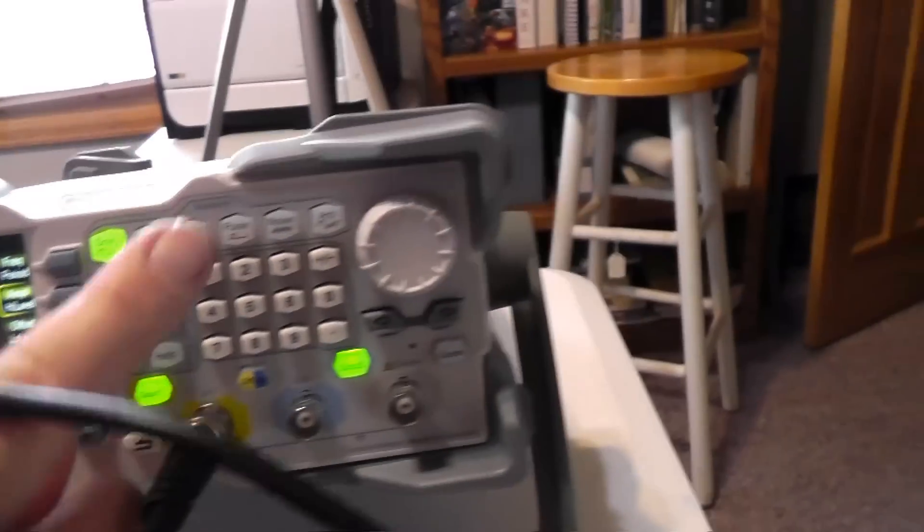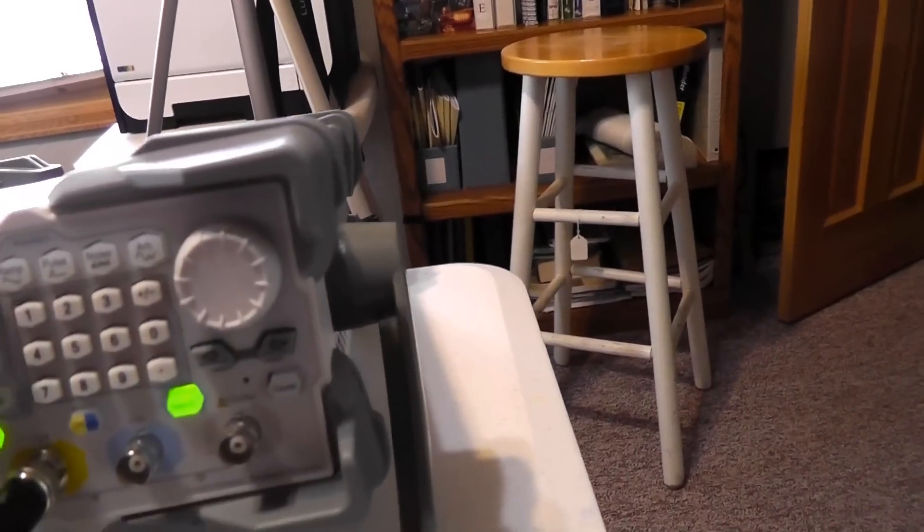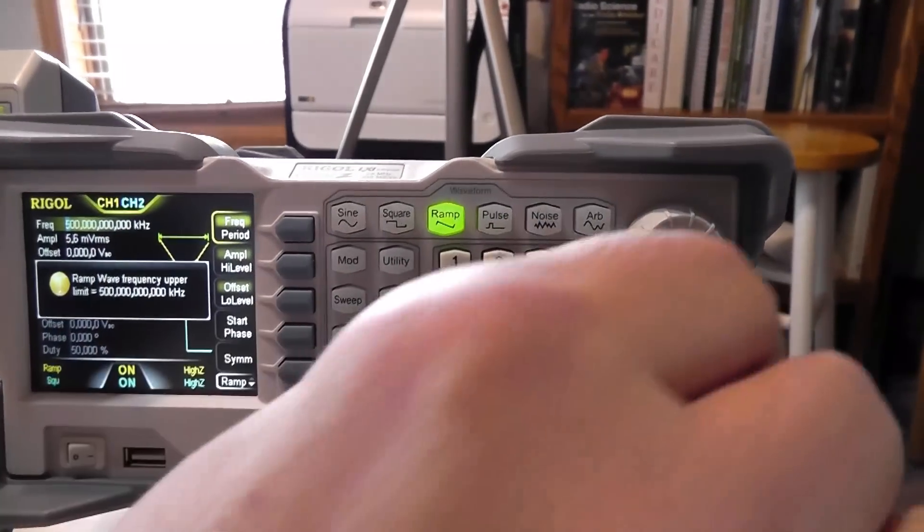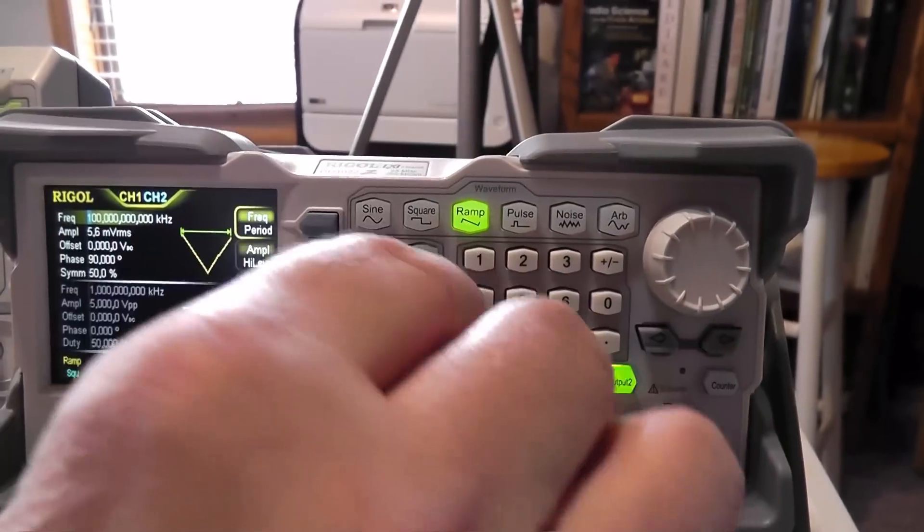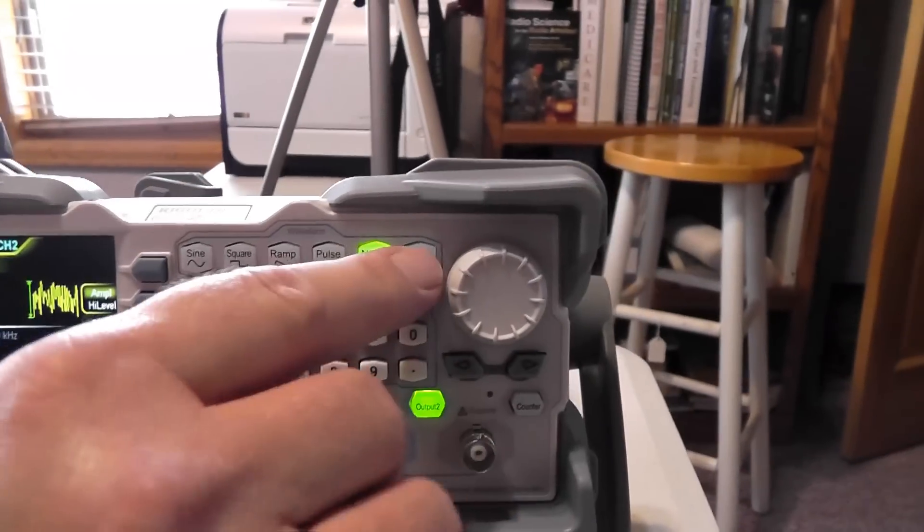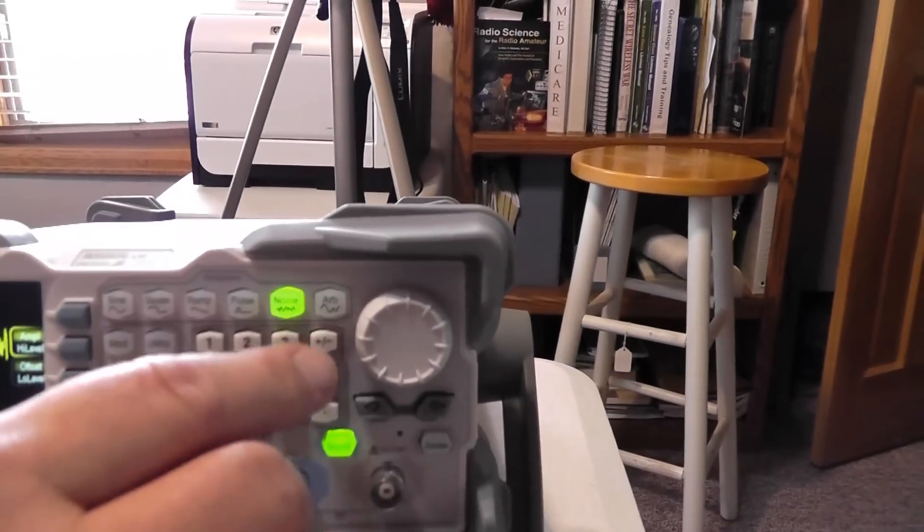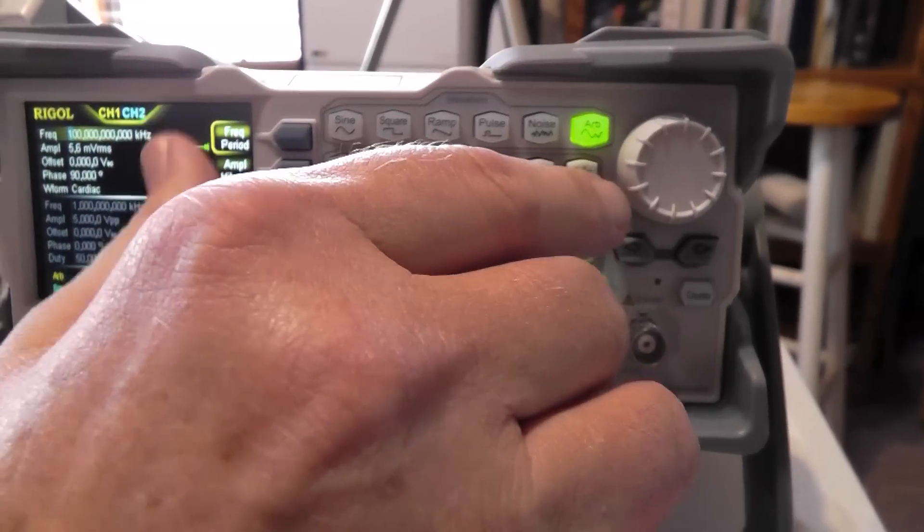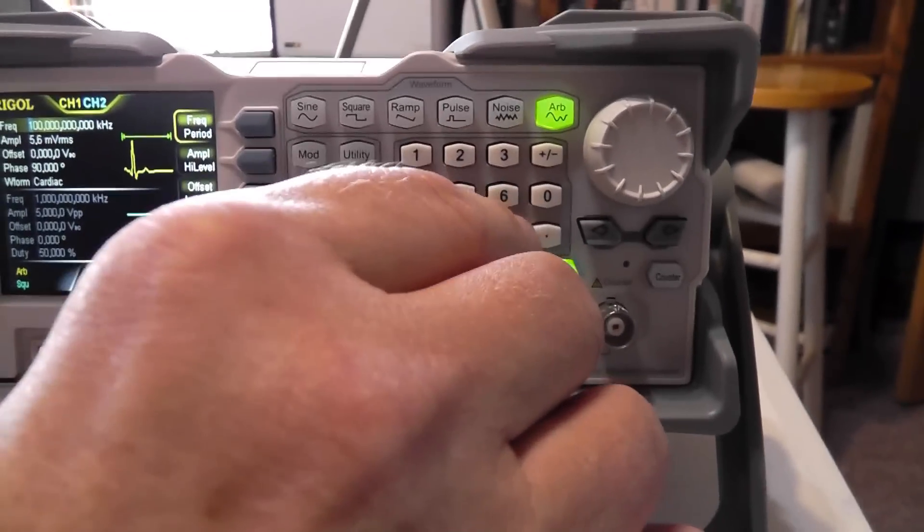And we've got sine wave, square, ramp. We've got the frequency up too high. Okay. And the pulse, general just noise if you want to check out a filter circuit. And then it has a whole bunch of arbitrary waveforms that are in here that you can use.